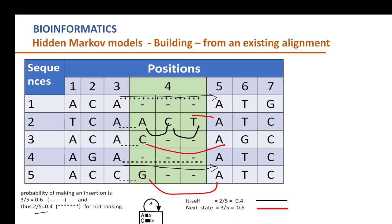Then the model continues. The transition probability from state 5 to 6 is 1, and from 6 to 7 the transition probability is also 1. The emission probabilities have already been calculated for these match states.